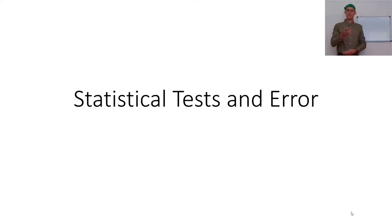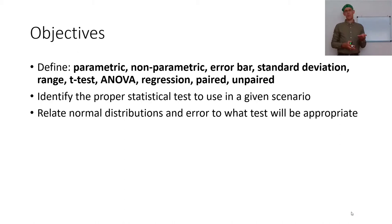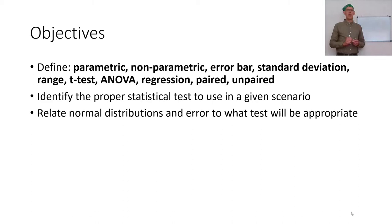In this lecture we're going to discuss statistical tests and different types of error. Our definitions for today include: parametric, non-parametric, error bar, standard deviation, range — covered previously — t-test, ANOVA, regression — more later — and paired and unpaired.